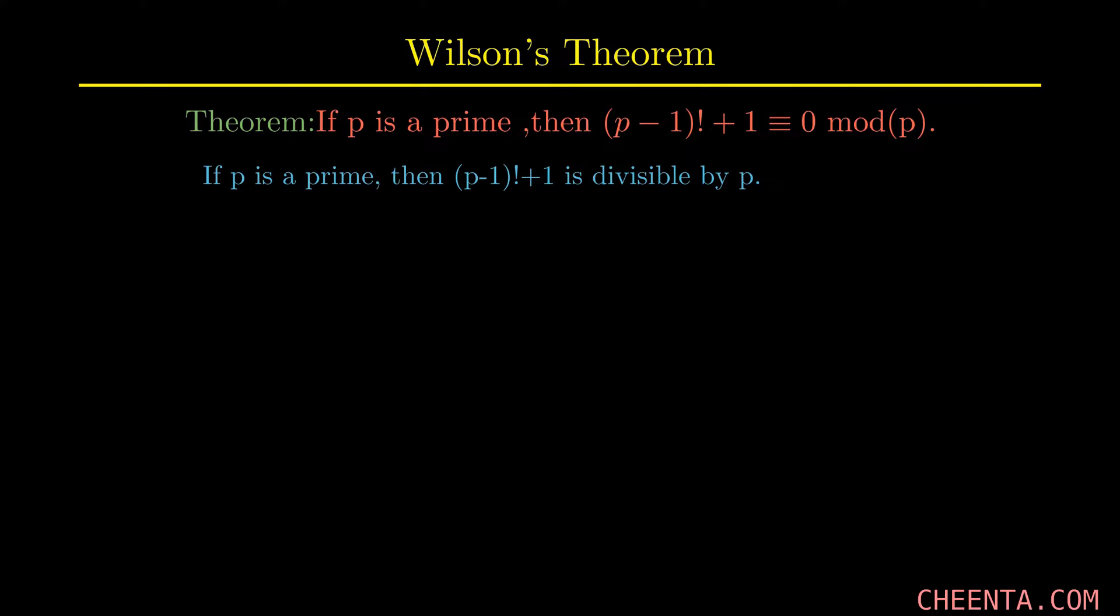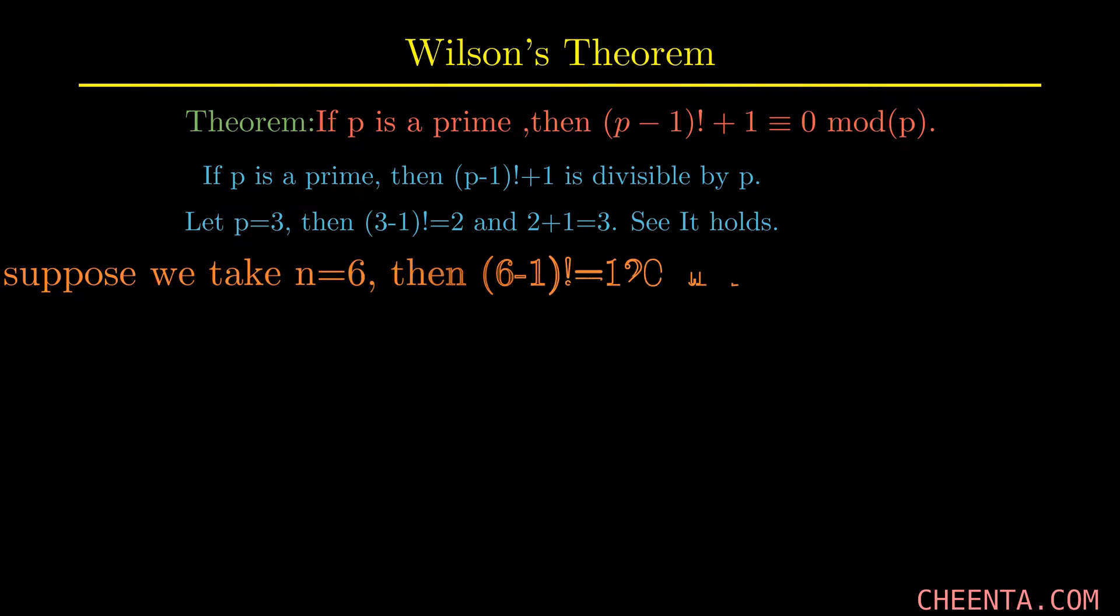Now let's take an example. Suppose p equals 3, then we can see that 3 satisfies. Now the interesting part of this theorem is that its converse is also true, so we can use this theorem to hunt primes. Suppose we take n equals 6, then we see that it does not satisfy the theorem, so it shows that 6 is not a prime number.